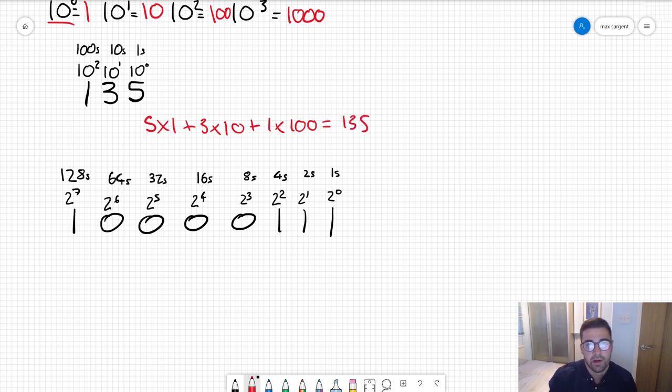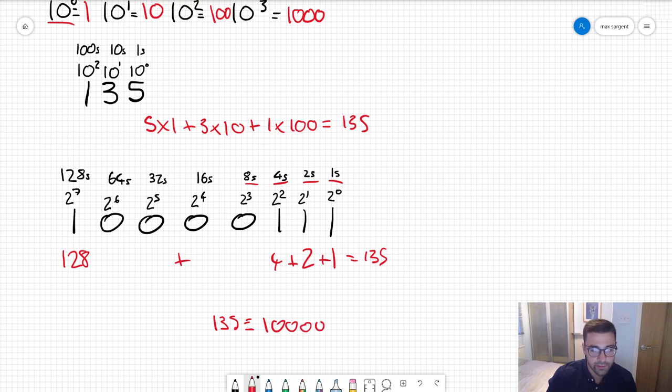You do the exact same process in binary. The interesting thing with binary is the digits can only be zero or one. So if it's a one you just take the column heading, and if it's a zero you just leave it. We've got our column headings: ones, twos, fours, eights, and so on. We look here, okay we have a one, we have a two, we have a four, we have 128. Add these together you get 135. So 135 is equivalent to the binary 10000111.